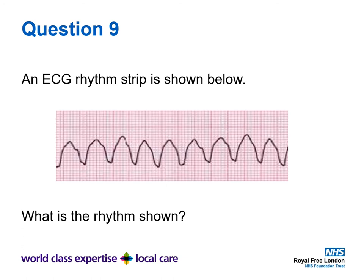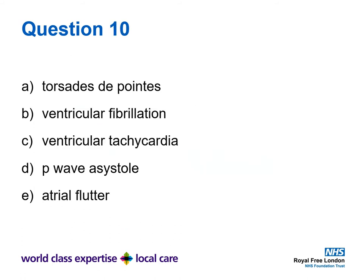Question nine. An ECG rhythm strip is shown below. What is the rhythm shown? Is it A) transcutaneous pacing, B) ventricular fibrillation, C) ventricular tachycardia, D) P-wave asystole, or E) atrial flutter?